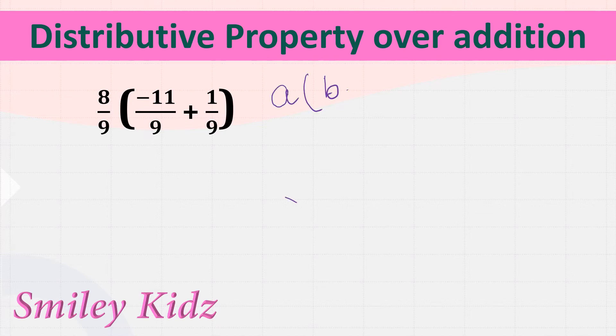First let's see distributive property over addition. The property is: a multiplied by (b plus c) is equal to a·b plus a·c. So let's apply the property and solve this example.